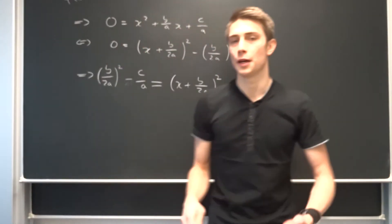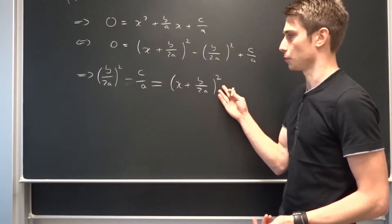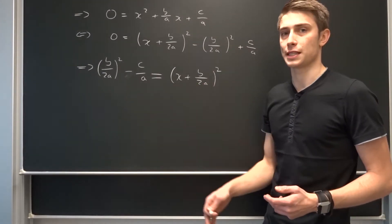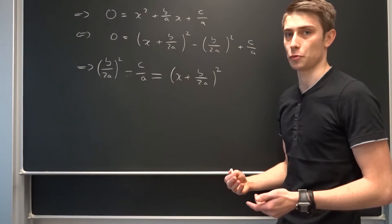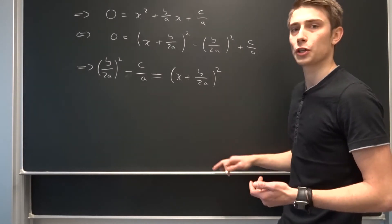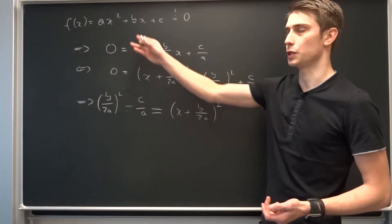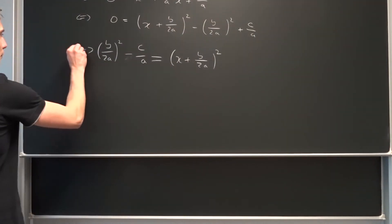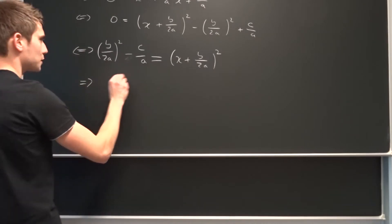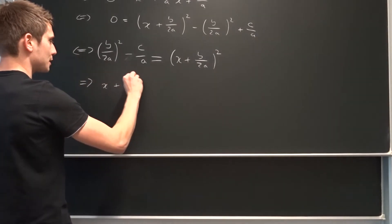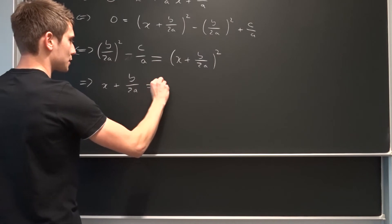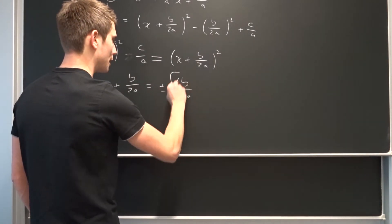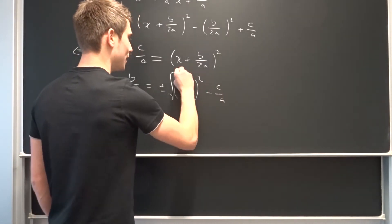Now we can take the square root on both sides. But if we take the square root on this side, it's plus or minus the square root, because we are talking about a polynomial of degree 2 — so that means we've got two solutions, two roots. So taking the square root gives us x plus b over 2a equals plus or minus the square root of b over 2a squared minus c over a.